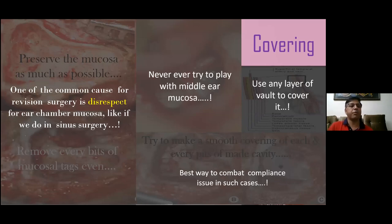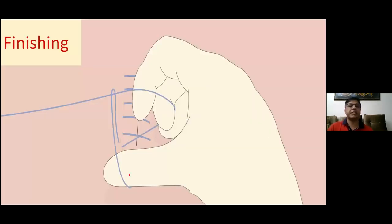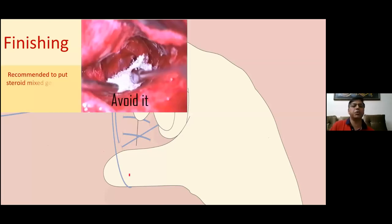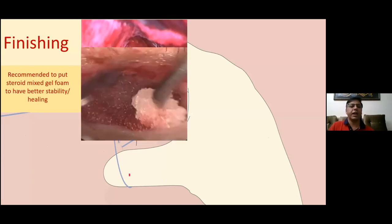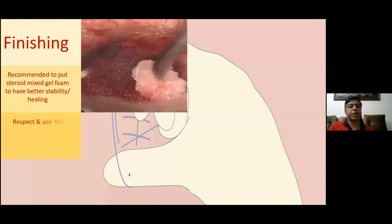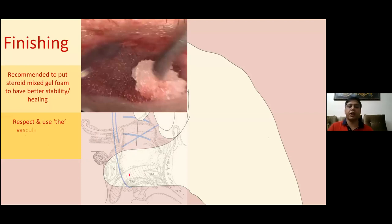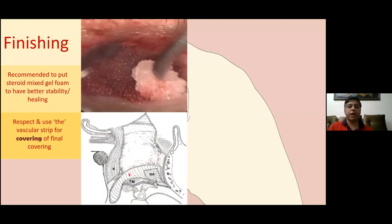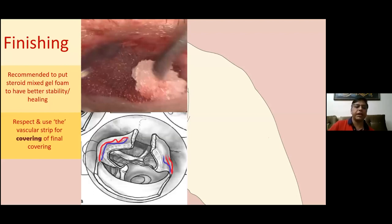Before finishing in revision cases, always recommend putting gel foam well mixed with an antibiotic steroid solution. Respect the anatomy and use the vascular strip for final covering, because that will give a beautiful outcome and beautiful results — you can get a healthy covering all around.